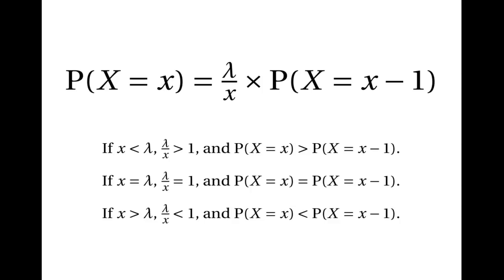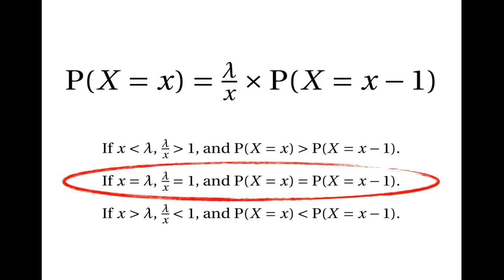So when x is less than lambda, the probability will keep increasing. When x is equal to lambda, it will stay the same. And when x is greater than lambda, the probability will decrease. This explains why when x is equal to lambda, you get two joint highest probabilities, where x and x minus 1 are both modes.